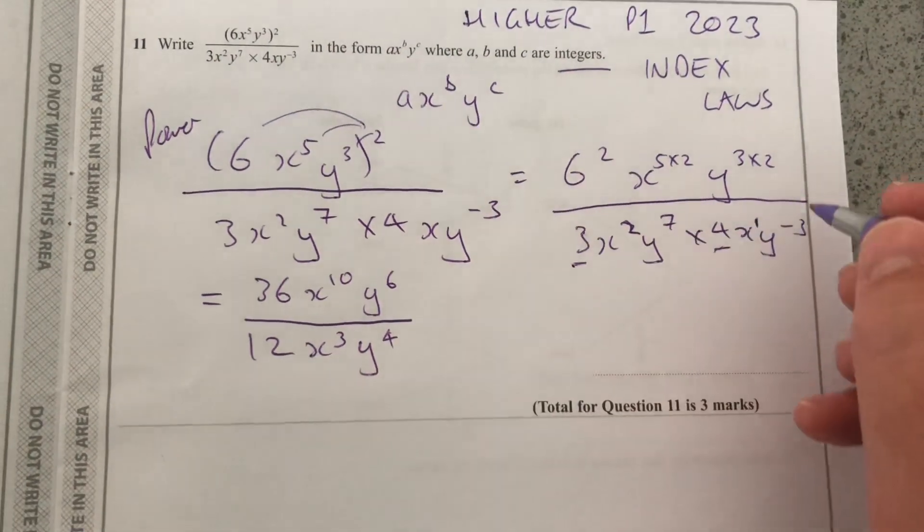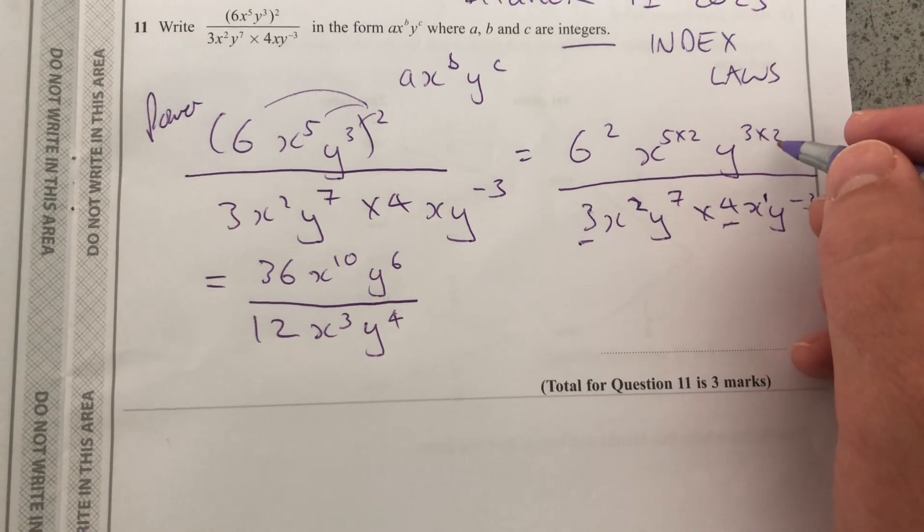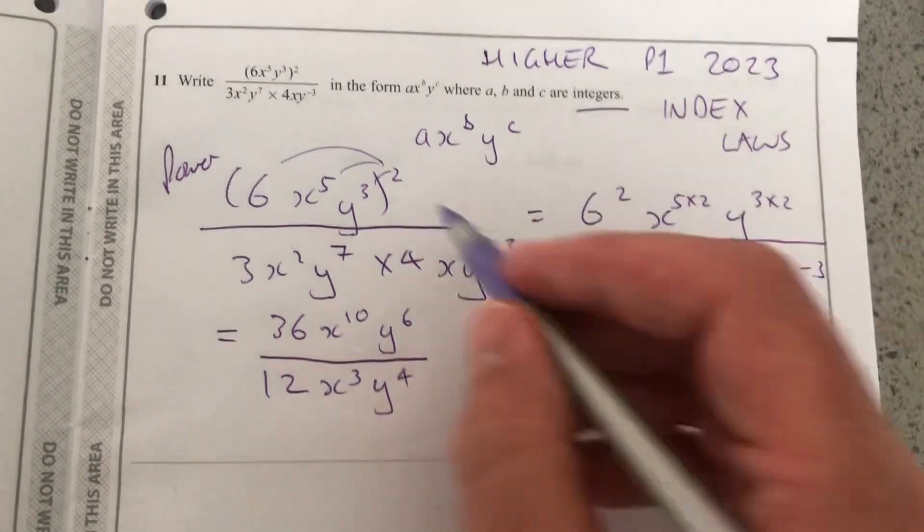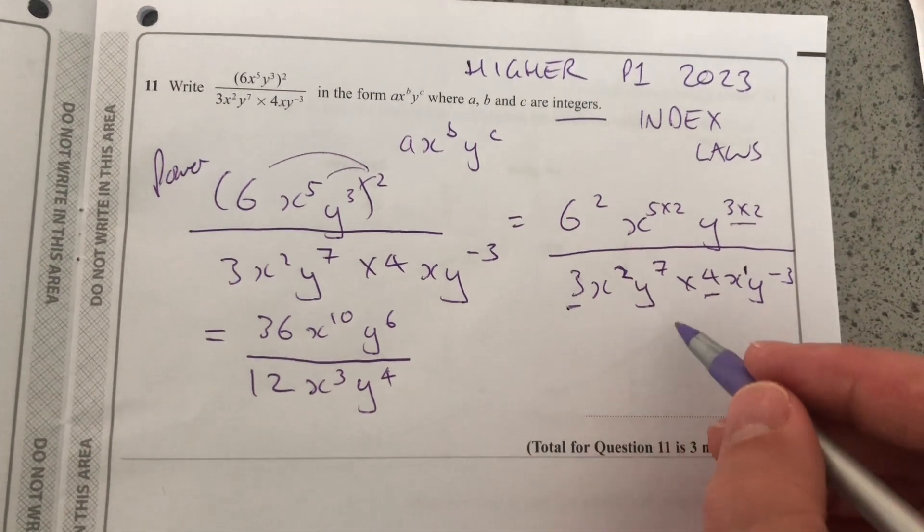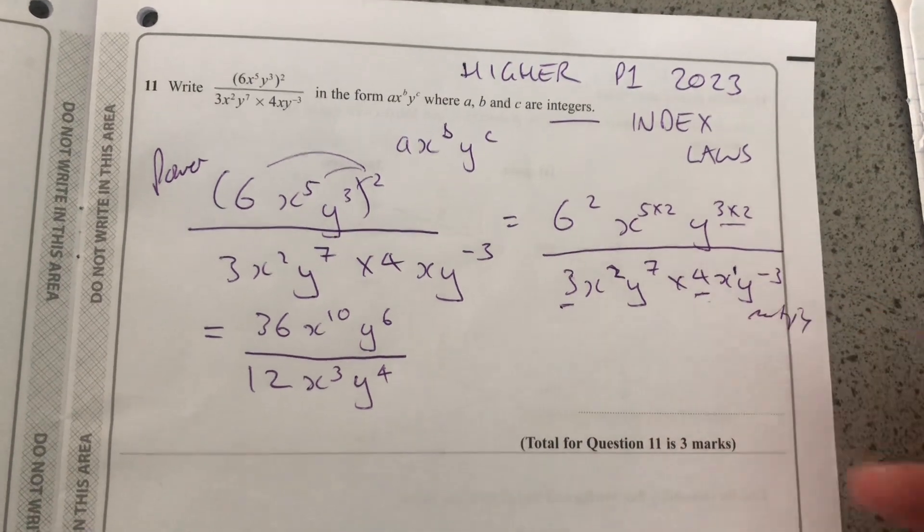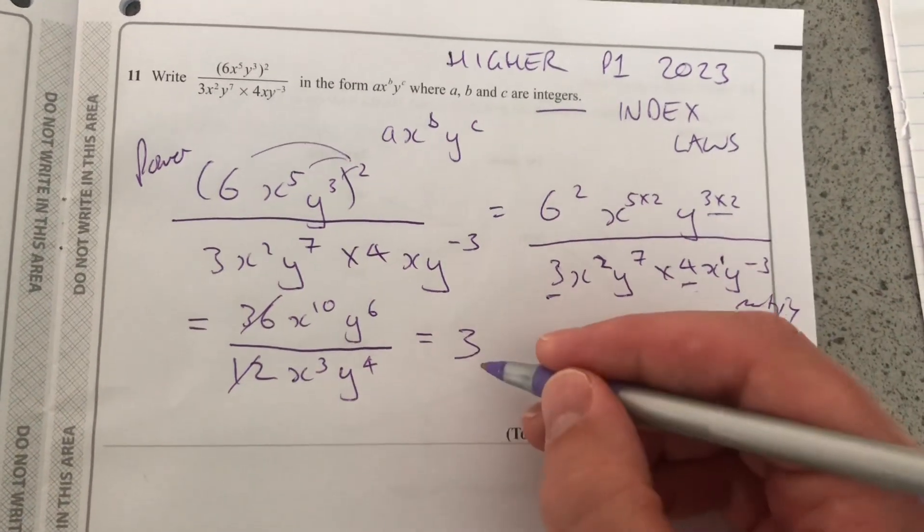And then I've used the multiplying law here. So the power law where you multiply and the multiply where you add law here. Now let's clear up the numbers. 36 divided by 12 is 3.